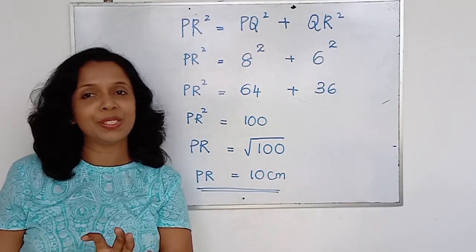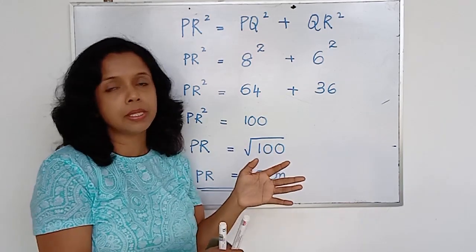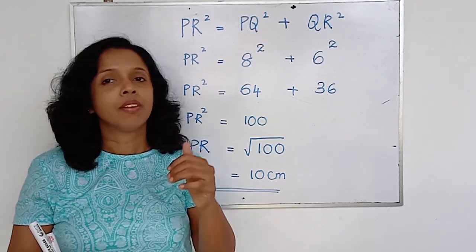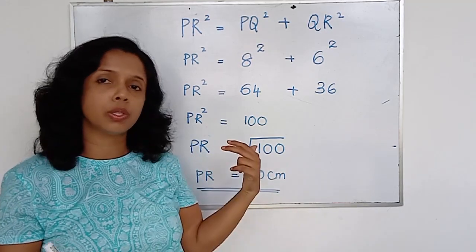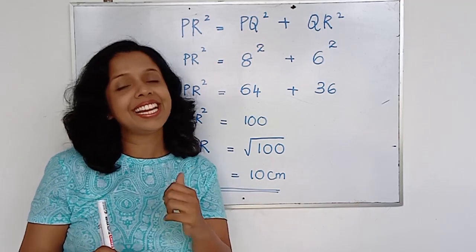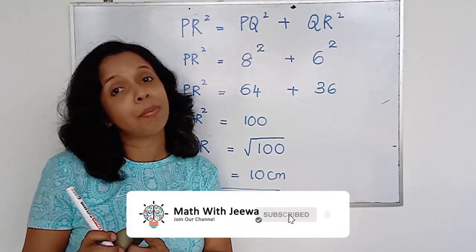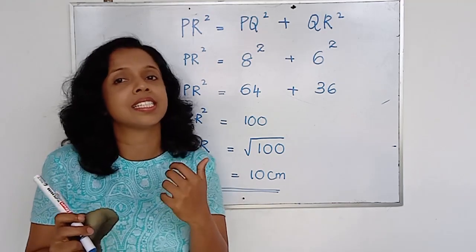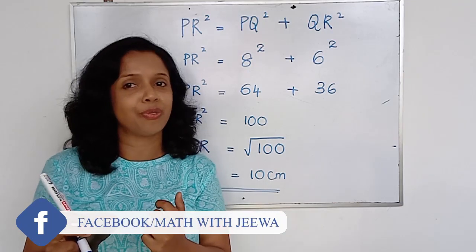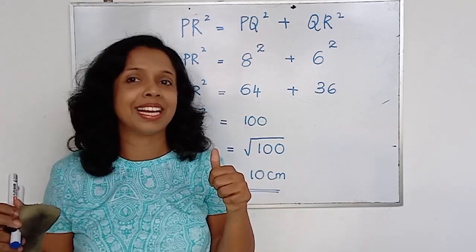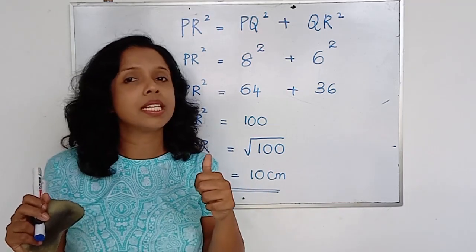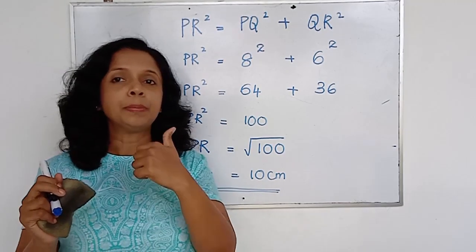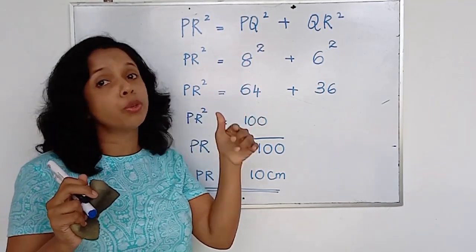Now you can understand how to find the value of the hypotenuse when the other two sides and the right angle are given, using the Pythagorean relation. This is not the end of this unit — we are going to continue. We want to do a few sums and cover another few areas in your textbook. Keep in touch — I'm going to release another two to three videos with regard to this chapter, Pythagorean relation. Don't forget to subscribe to my channel, Math with Jeeva, and share this YouTube channel with your friends and ask them to join us to be a Master of Math. See you, children — we will meet again with another theory related to Pythagorean relationship and we will do a few sums.